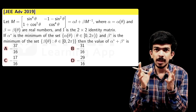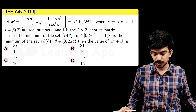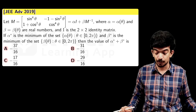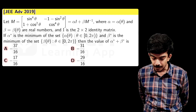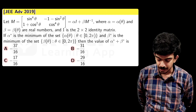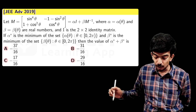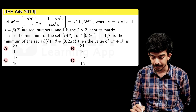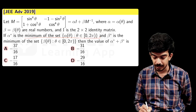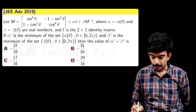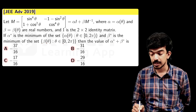The question: Let M be a 2×2 matrix with entries sin⁴θ, −1−sin²θ, 1+cos²θ, cos⁴θ, equal to αI + βM⁻¹, where α = α(θ) and β = β(θ) are real numbers, and I is the 2×2 identity matrix. α* is the minimum of the set of all α(θ) for θ ∈ [0, 2π], and β* is the minimum of β(θ). We need to find the value of α* + β*.